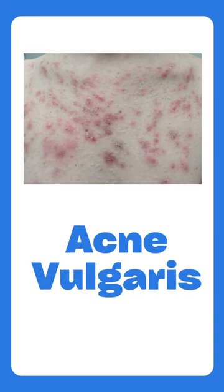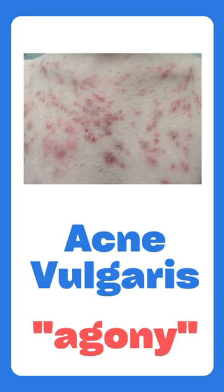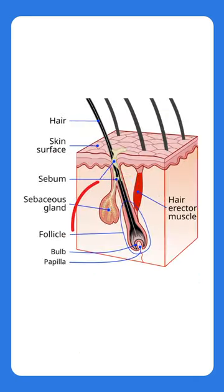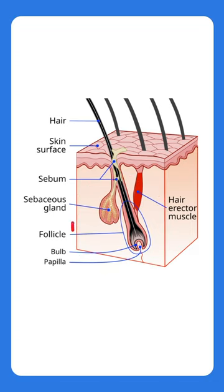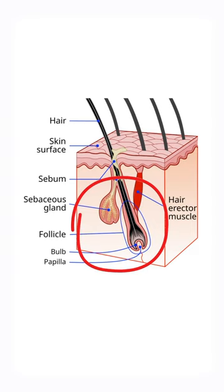Acne vulgaris, also known as acne, is a common condition that often affects adolescents, although it can also affect adults. Acne involves the hair follicle as well as the sebaceous glands, which produce sebum, and there are different types which we will cover right now.